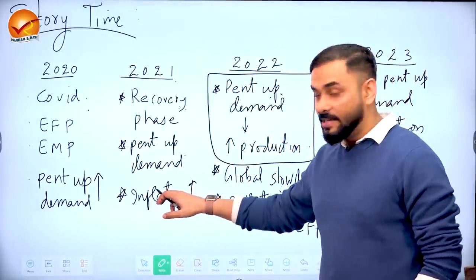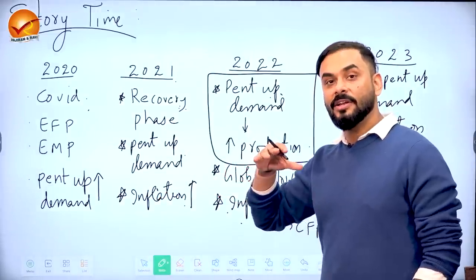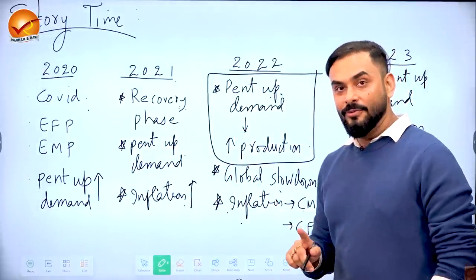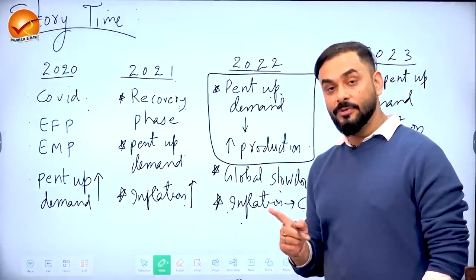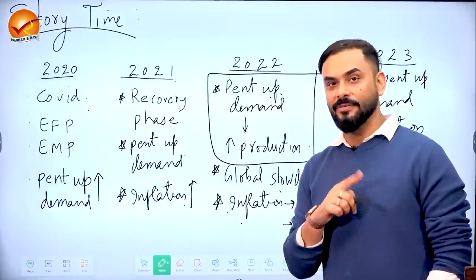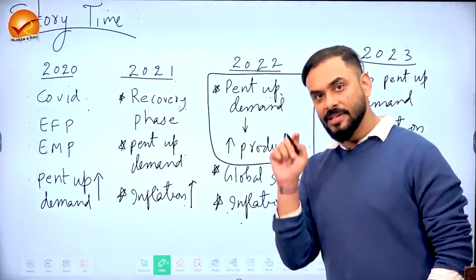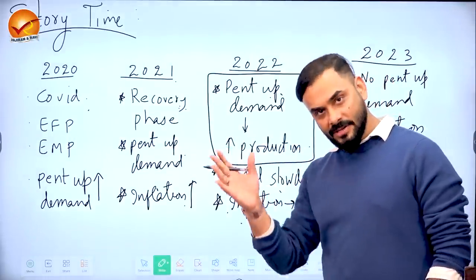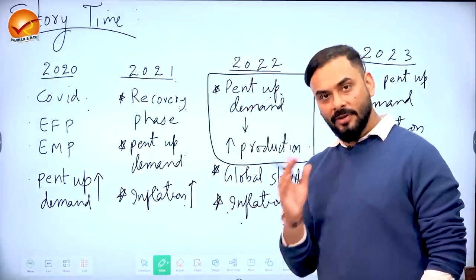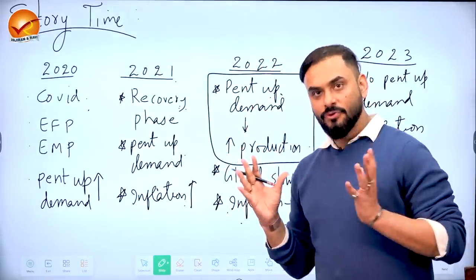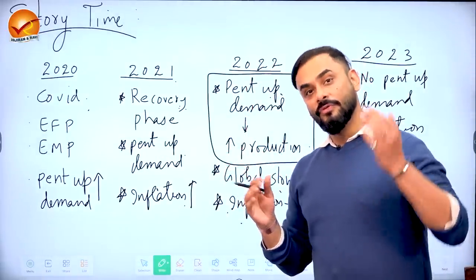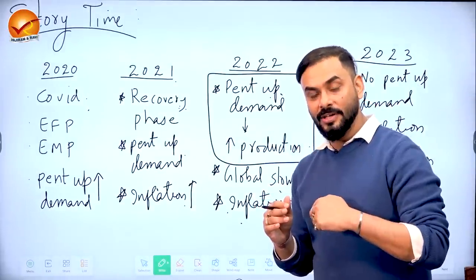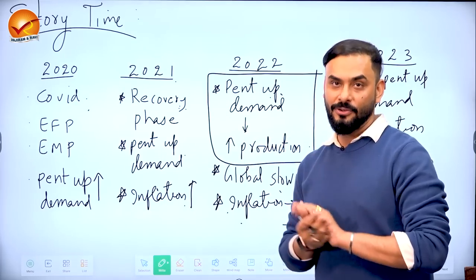To control inflation, the entire world followed contractionary monetary policy — interest rates were increased across the world including India, and taxes were cut. When interest rates increased, dollars from India started flowing out. With more rupees and fewer dollars, the value of the rupee went down — depreciation — making imports costly and increasing the current account deficit.